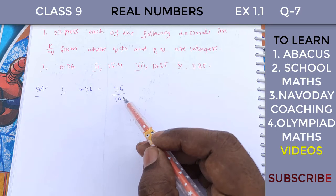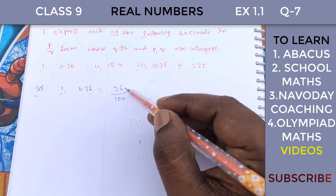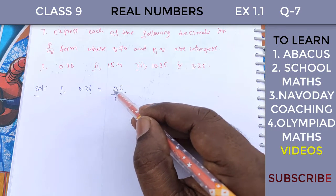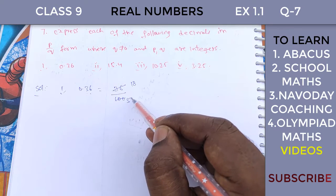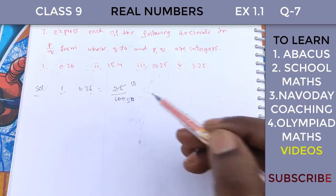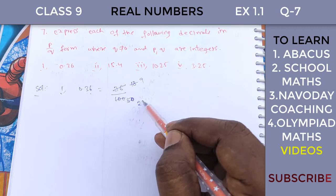The simplified form is obtained by canceling common factors. For example, we cancel by dividing by 2. 36 over 100: 18 times 2 over 50 times 2. We cancel the 2s to get 18 over 50. Then 9 times 2 over 25 times 2. Cancel the 2s again to get 9 over 25.